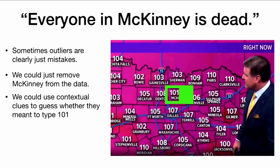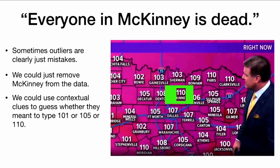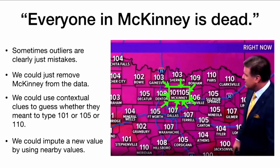Or we could use some contextual clues to guess whether they may have meant to type 101 degrees, or maybe 105 degrees, or maybe 110 degrees. Or we could use the nearby towns to impute a new value. The average of the surrounding towns is 106 degrees, so we could just guess that McKinney is 106 degrees too. Of course, that's not necessarily correct, but it is a good guess based on the data.